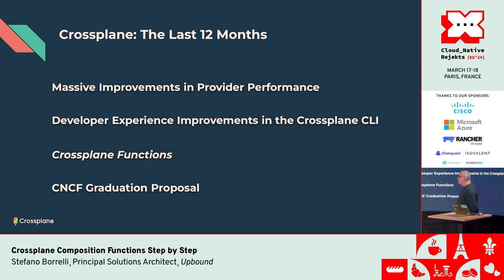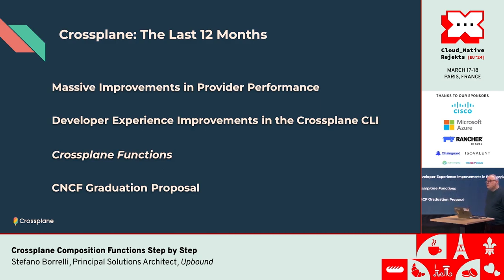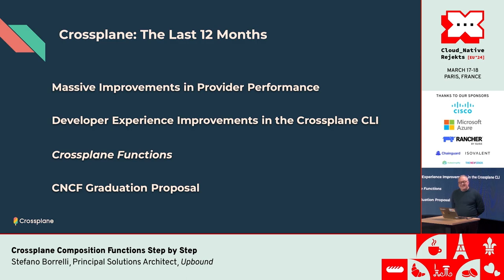From talking to Crossplane users and Upbound customers, we invested heavily in developer experience. The Crossplane CLI has gotten a lot of new features - everything from top functionality to tracing to being able to render compositions in advance. The signature feature of 1.14 has been Crossplane functions, which we'll talk about today. It really changed Crossplane almost like a 2.0 - we've seen almost everyone move to functions within a few months. We're also a candidate for CNCF graduation, just waiting for the TOC vote.